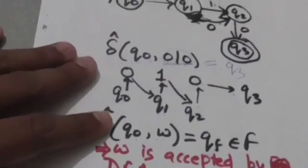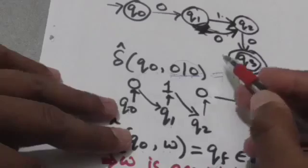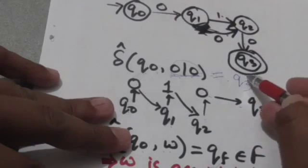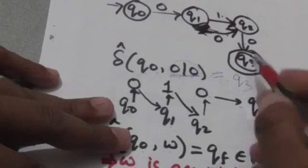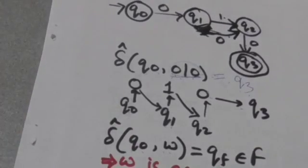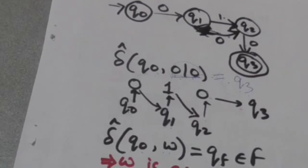It means when a DFA is in its initial state and we apply a string of input symbols, and after reading that string it jumps to some final state, then we can say that the string of input symbols has been accepted by the DFA. So a string is accepted by a DFA when it drives the DFA from its initial state to any one of its final states. The set of all strings accepted by the finite automata is the language of that finite automata.